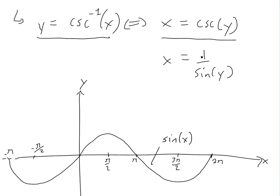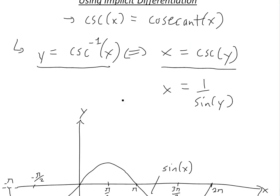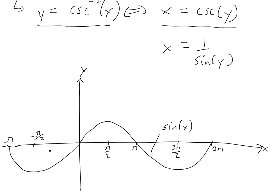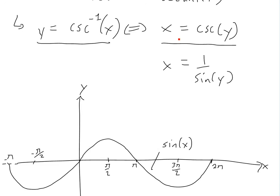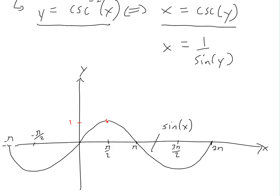Before I get to the proof, we need to find the domain and range of this inverse function. I've graphed out a regular sine of x function from 0 to 2π. Now let's graph cosecant of x. The cosecant graph is just 1 divided by whatever the sine function is. At the peak where sine equals 1, 1 divided by 1 is 1, so cosecant has the same point. This red curve is cosecant x.